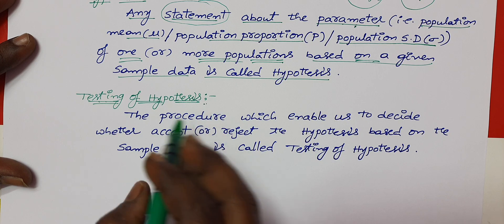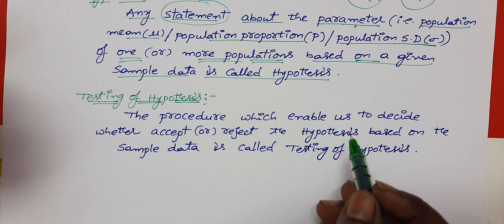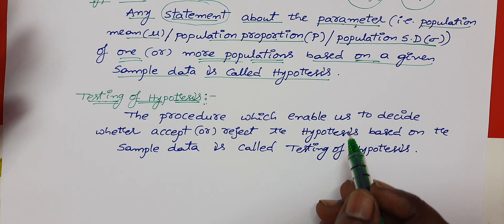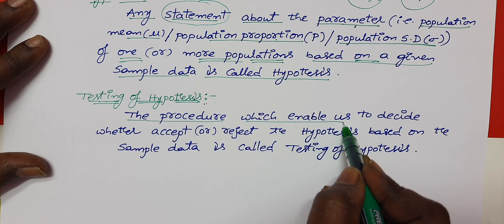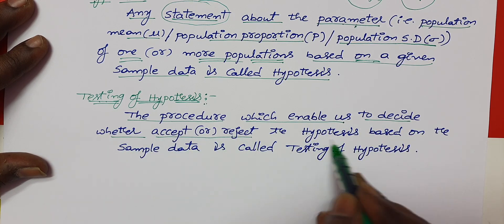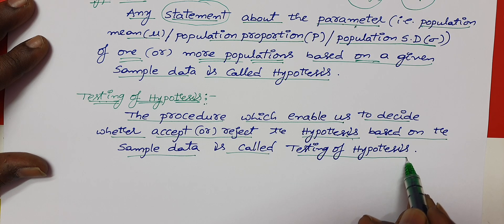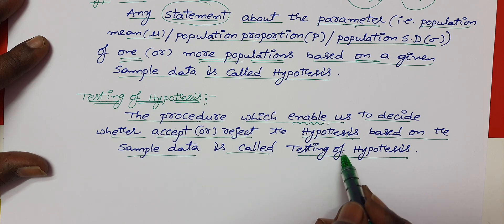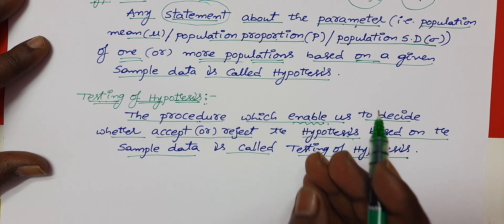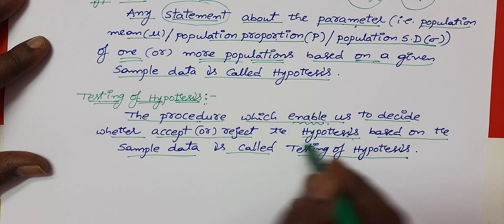So, testing of hypothesis. There is both a practical and theoretical aspect. If you check a pen shop and check it out, it is practical. Testing of hypothesis is a procedure that enables us to decide whether to accept or reject the hypothesis — a statement based on the sample data. If you accept or reject the statement, that is the procedure.